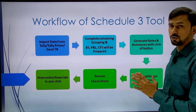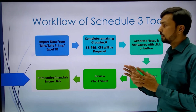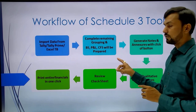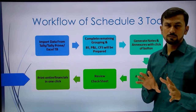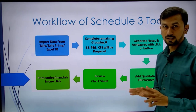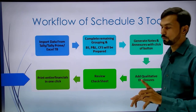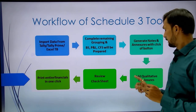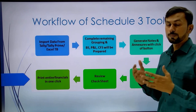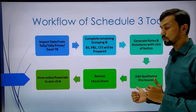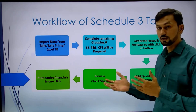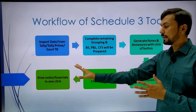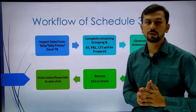Looking at the workflow, it is divided into six different stages. First, we import data from Tally. Then we complete the grouping — around 50-60% of grouping happens automatically, and the remaining needs to be done only once. With the click of one button, we generate the annexures and notes. Then we add the qualitative disclosures, which vary company to company. After that, we review the check sheet, analytical chart, and ratio sheet for finalization, and finally print the financial statements.